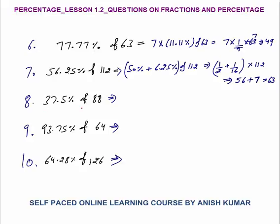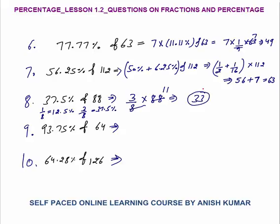Next is 37.5% of 88. Now we know that 1/8 is 12.5%. So 3/8 would be thrice of this — 3/8 would be 37.5%. Very important fraction. So 3/8 of 88: 8 × 11 = 88; 3 × 11 = 33. Straight away you can answer this question without writing.